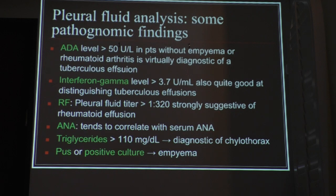The ADA level — we do it when we think there is no empyema, because an empyema can actually give you a positive ADA. An ADA level greater than 50 is virtually diagnostic of a tuberculosis effusion. Interferon gamma is also an additional test, but we don't order it routinely when we suspect tubercular effusion.